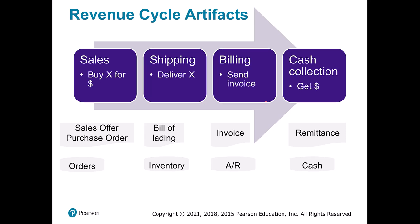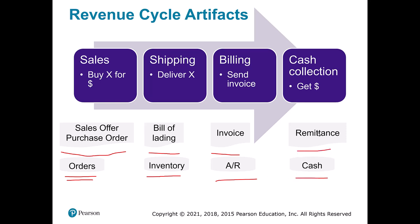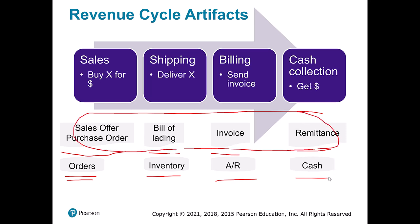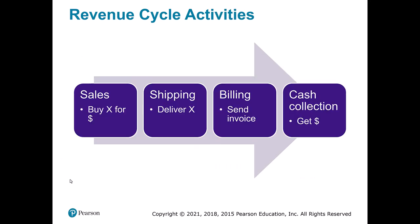All of these tie to some sort of data source as well. The sales offer and purchase order element gets tracked under our orders table. The bill of lading impacts our inventory. Invoices go to our receivables, and remittances go with our cash. So each of these has some kind of artifact and they also tie to some sort of data in our ERP system.